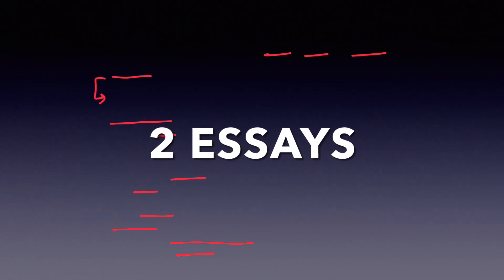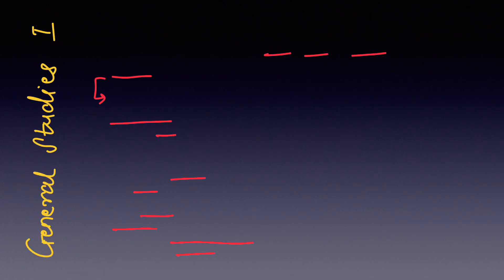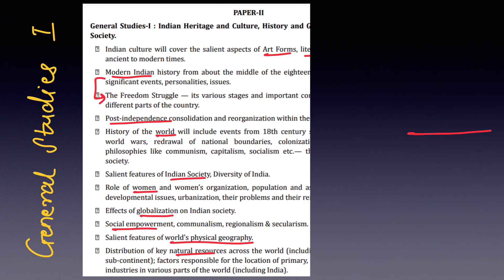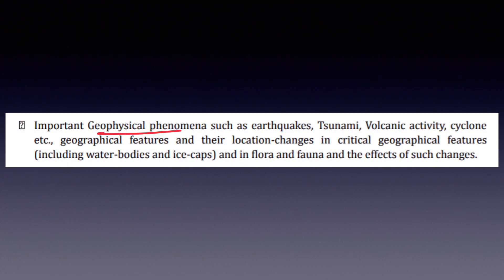Now let's understand General Studies Paper 1 — it's all about history, world geography, and Indian society. Topics range from ancient history to modern India, post-independence, and world history. It also covers salient features of Indian society, the role of women, effects of globalization, salient features of world geography, and distribution of key natural resources. Another important topic in GS Paper 1 is geographical phenomena — meaning earthquakes, tsunamis, volcanoes, etc.